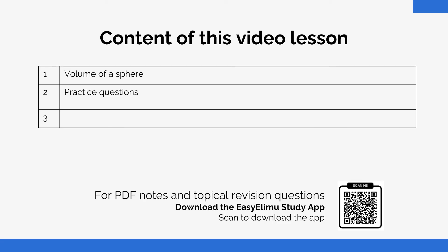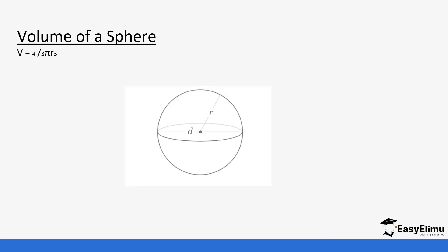We've already discussed a number of solids in the previous videos — you can check how we did those calculations. This is going to be the last bit of it. We also talked about the surface area of a sphere. A sphere is a circular solid, so the volume formula is a bit different from the surface area, but this is one of those straightforward solids that is easier for you to calculate.